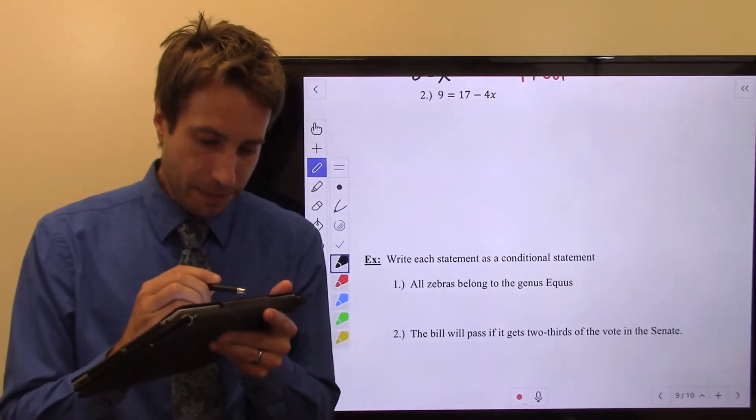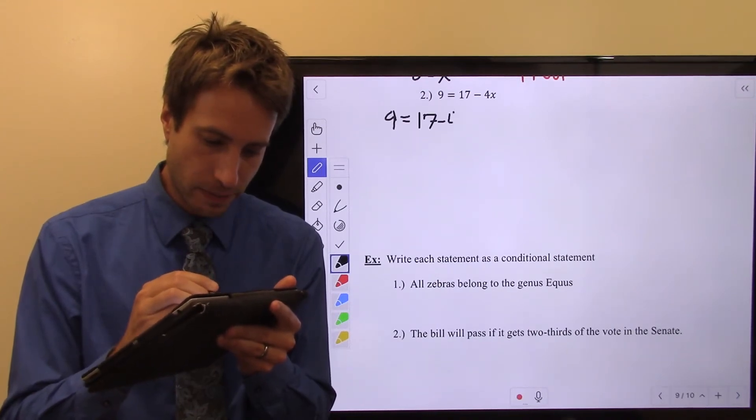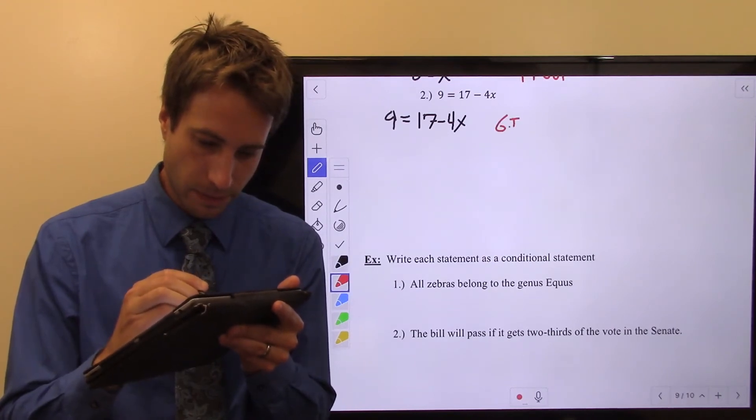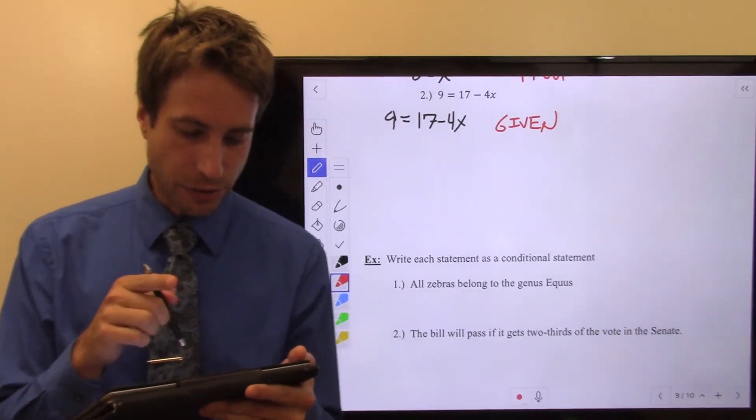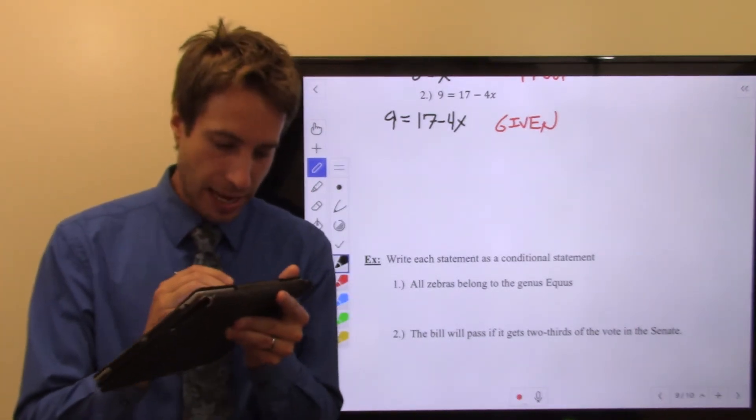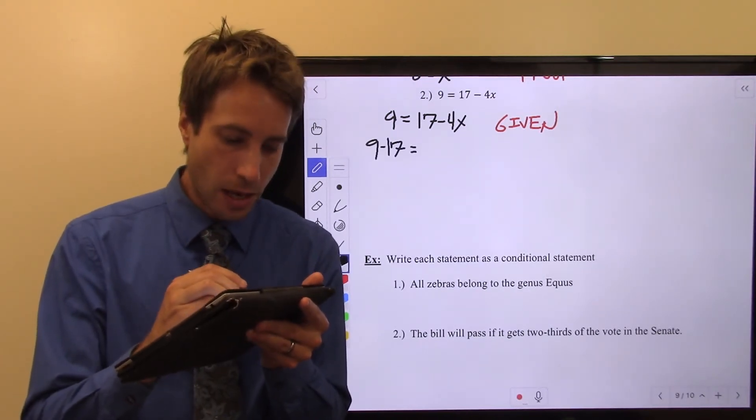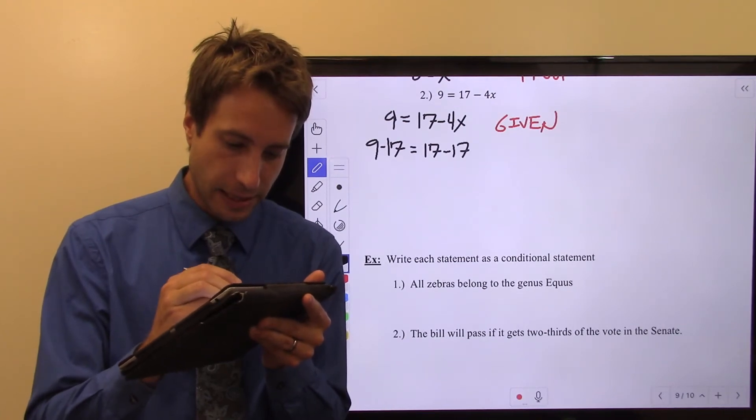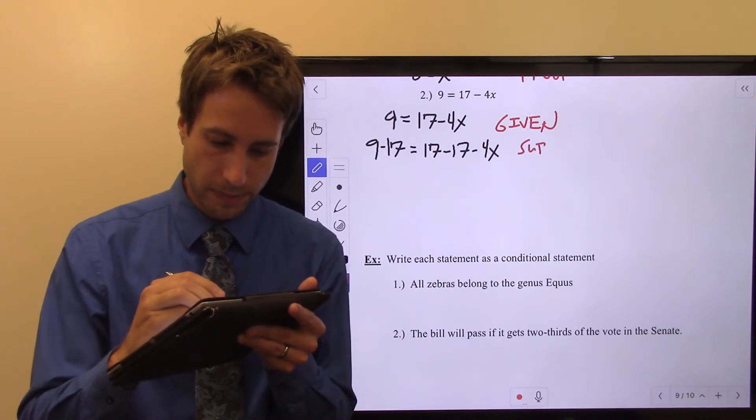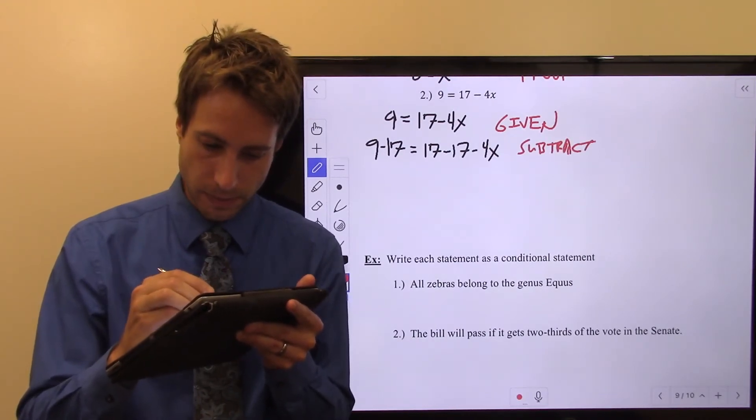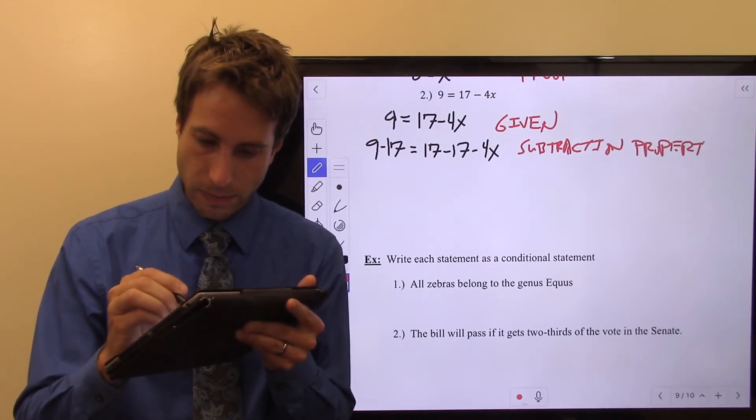So I am given 9 = 17 - 4x. Then what? Well, we got to get that x by itself. So let's move 17 to the other side. I will have 9 minus 17 equals 17 minus 17 minus 4x. That is the subtraction property.